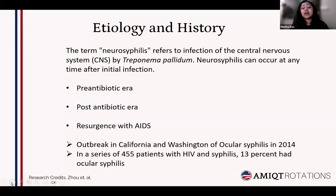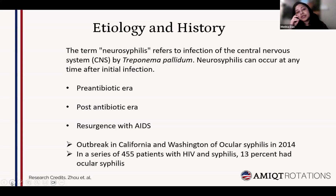This was prevalent in the pre-antibiotic era and came to a decline after the advent of penicillin. We saw a decline in cases until the last two decades, where there was a resurgence with AIDS — with 100,000 cases reported to the CDC in the US. There was a notable outbreak in California and Washington, where cases of ocular syphilis occurred in patients with HIV and many of them turned blind. A case series of 455 patients with HIV and syphilis showed many had ocular syphilis, and a significant number of infections progressed to neurosyphilis.